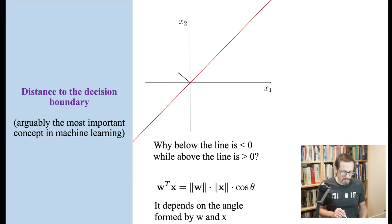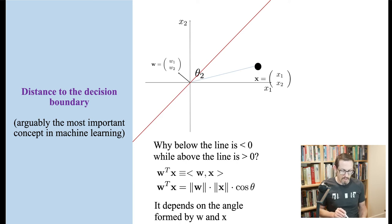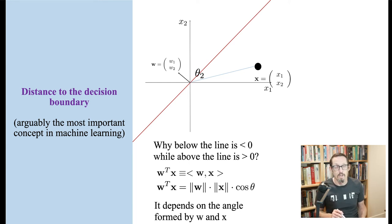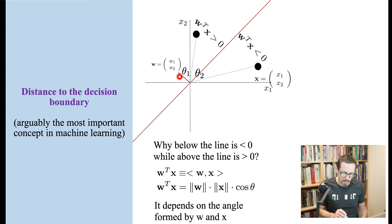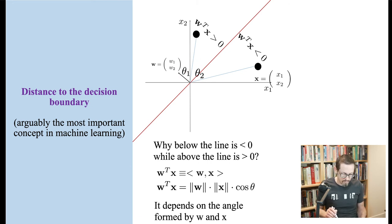We can also formulate this as a cosine. The cosine of the angle between the vectors is adjacent over hypotenuse — giving the magnitude of the X vector and the W vector projecting onto each other. That's an alternative formulation, but I prefer the dot product as it makes life easier.